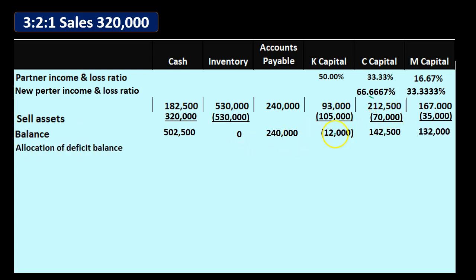That negative 12,000 is the problem we will have to deal with. C's capital account goes from 212,500 down by 70,000 to 142,500. M's capital account goes from 167,000 down by 35,000 to 132,000. Then we're going to allocate this deficit. We went to Kay and said, 'Could you pay the capital account back?' We sold the inventories but had this loss, allocated that loss 50% to Kay, which brought the capital account from positive to negative — representing the fact that Kay owes the company money. Kay may say 'I'm not paying' since it's a liquidation and they just want out of this partnership.